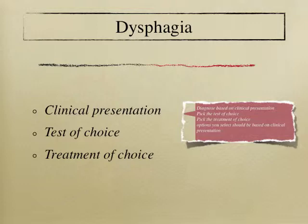One, you will be asked clinical presentation based on which you may have to make a diagnosis. Second, you may get a set of questions on the test of choice — this could be initial test of choice or could be absolutely the best test of choice. And then lastly, you would be asked the treatment of these clinical conditions.